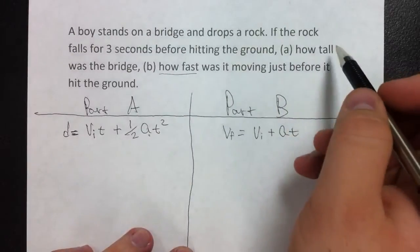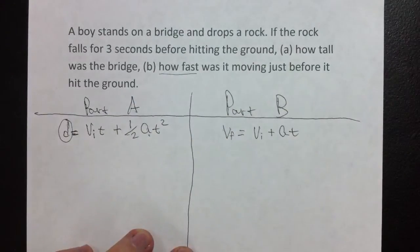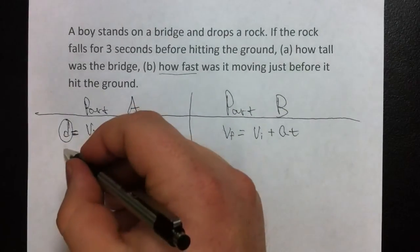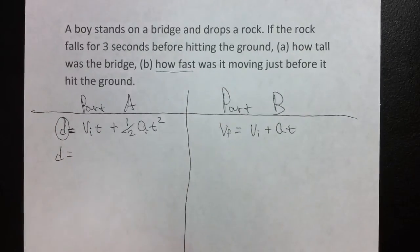So again, we're asking how tall was the bridge. What we're looking for here is the distance. We're going to put distance is equal to—the initial velocity. Since he's dropping the rock and not throwing it down, the initial velocity comes to zero.